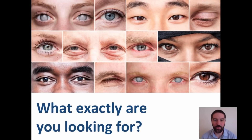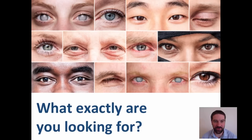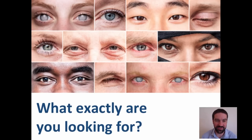Interesting, isn't it? What a great example of the fact that if you don't know what you're looking for, if you don't ask the right questions, then it's almost impossible to find what you're actually looking for. For example, if I'd asked you to look out for the gorilla, you'd have spotted it straight away. But by distracting you — asking you to count how many times people passed the white balls — it was almost impossible to find the answer.